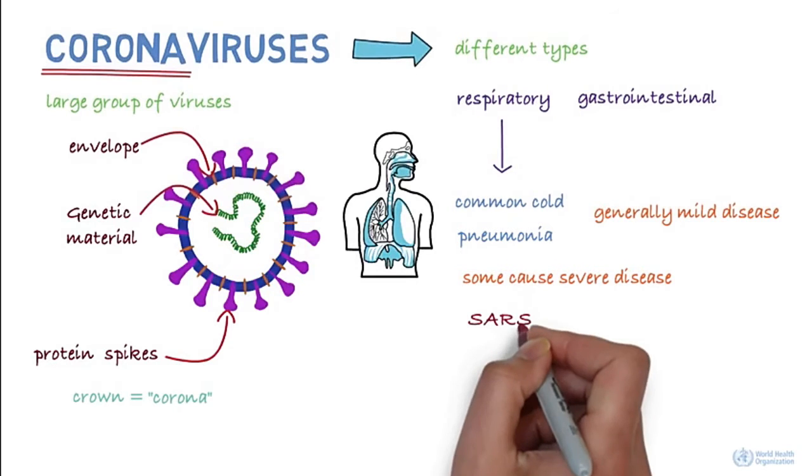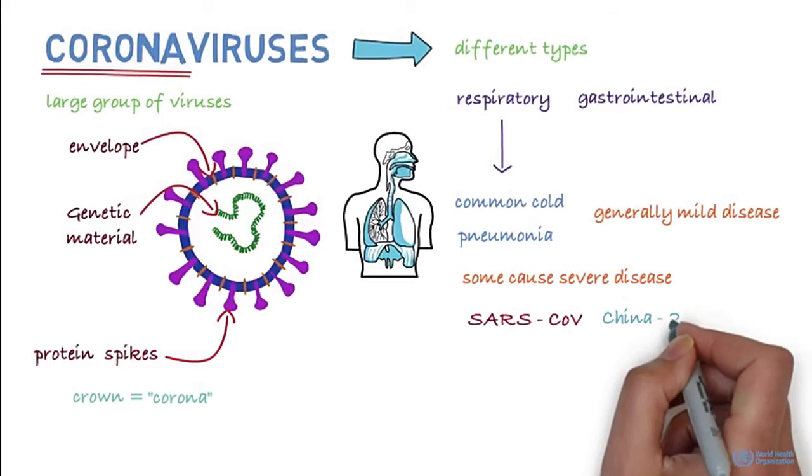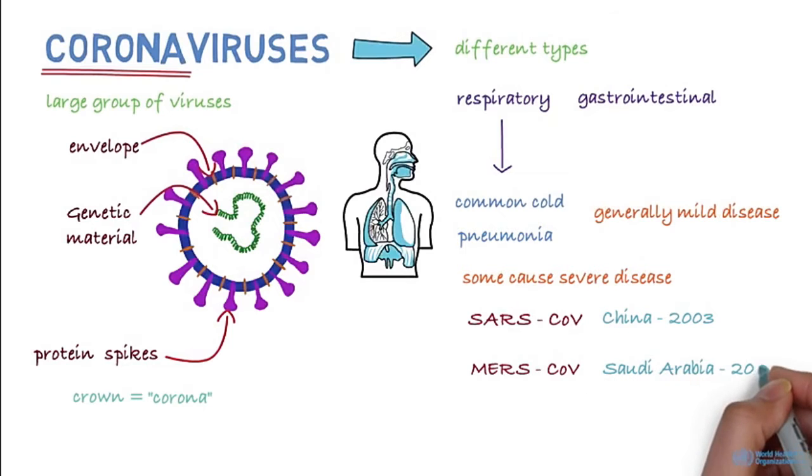These include the Severe Acute Respiratory Syndrome Coronavirus, first identified in China in 2003, and the Middle East Respiratory Syndrome Coronavirus that was first identified in Saudi Arabia in 2012.